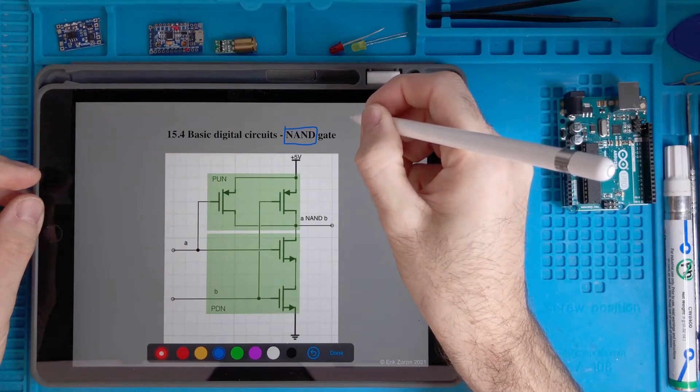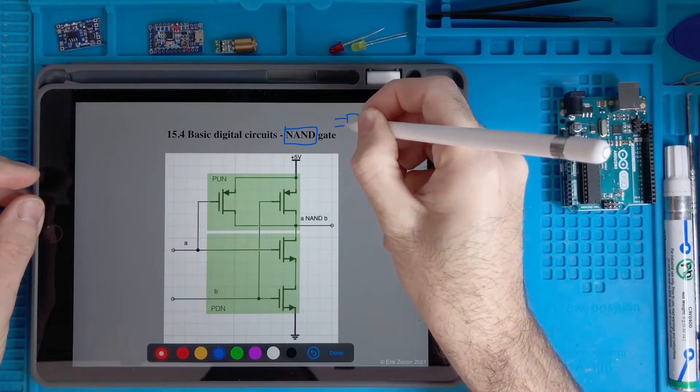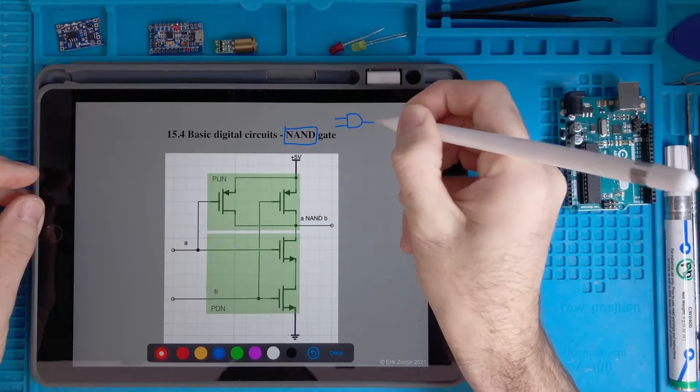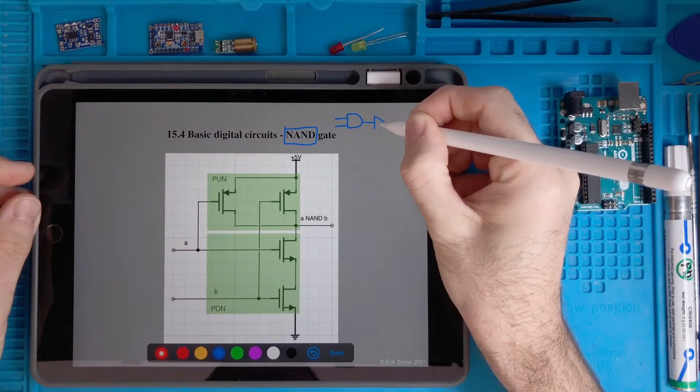It means that we have an AND gate like this, and then the result of this operation is put into a NOT gate.